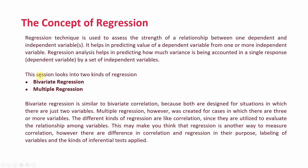This session looks into two kinds of regression: bivariate regression and multiple regression. Bivariate regression is similar to bivariate correlation because both are designed for situations in which there are just two variables, whereas multiple regression was created for cases in which there are three or more variables. The different kinds of regression are more like correlation since they are utilized to evaluate the relationship among variables. This may make you think that regression is just another way to measure correlation.